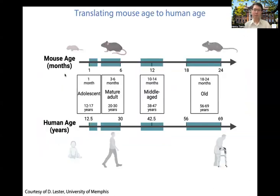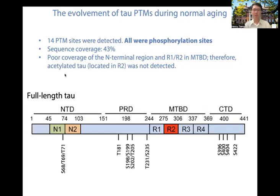Before I show you the results, I wanted to give you an idea of why I chose these four ages of mice. As you can see in the figure, 4, 12, and 20 months of mouse age are approximately equivalent to mature adult, middle-aged, and old categories of human. The 8-month-old time point falls between mature adult and middle-aged, which can give us information on the status of Tau right before the conversion to H-Tau.